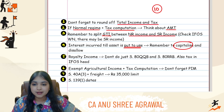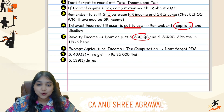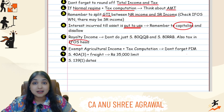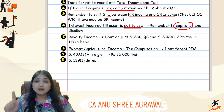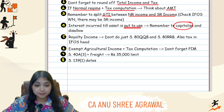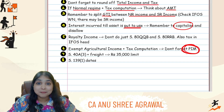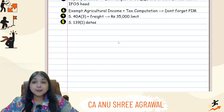Point number five: if an assessee is having royalty income, 80QQB and 80RRB will come to your mind — but don't do just that. Also remember to tax that royalty income under the IFOS head. Point number six: if an assessee has exempt agricultural income and you're asked to compute tax, don't forget to apply the partial integration method for tax computation.